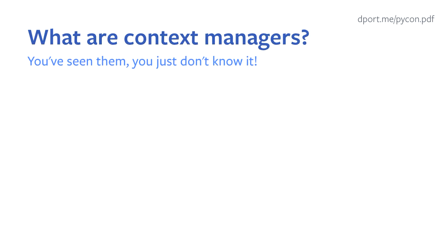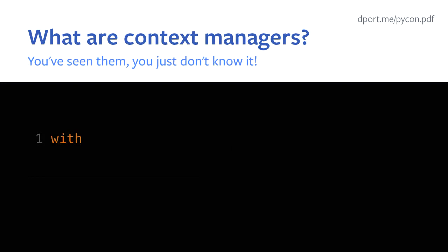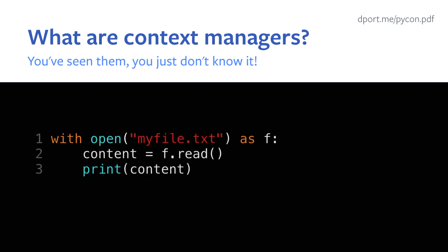Lots of people I talk to don't know what context managers are by name, but pretty much everyone has used them. Anytime you see the word 'with', maybe accompanied by 'as', you're looking at a context manager. The classic example is opening a file. This simple example opens a file for you and gives you a handle to that file, f, as some sort of reference. After exiting that block, f is closed and read and write operations to that handle will fail. So context managers manage your context — in this case a file.